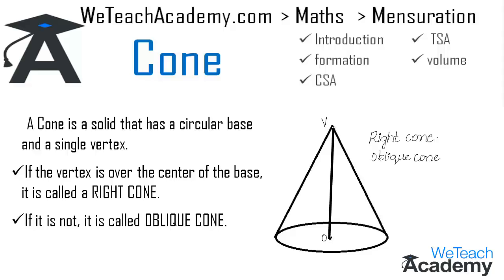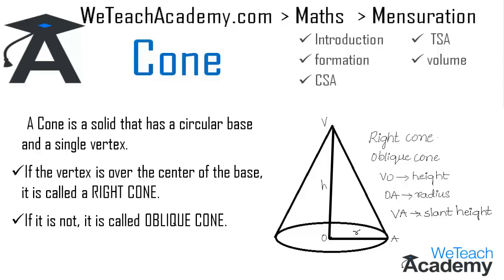Observing the diagram, VO will be the height of the cone, represented by the letter H, whereas OA is the radius of the base of the cone, represented by the letter R. The line which goes from the vertex V and touches the side of the base of the cone is called the slant height. Here VA is the slant height and it is represented by the letter L.